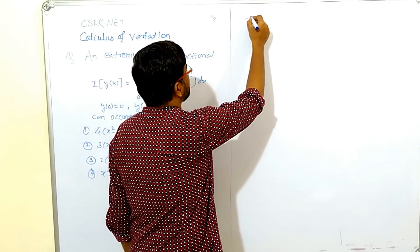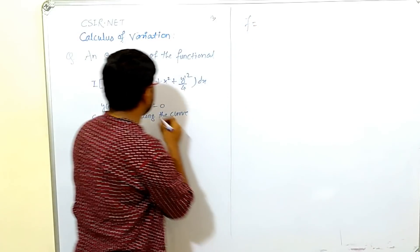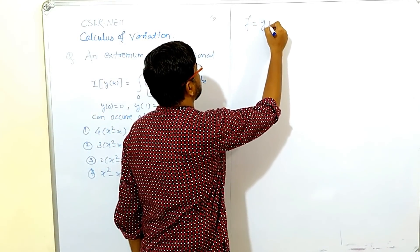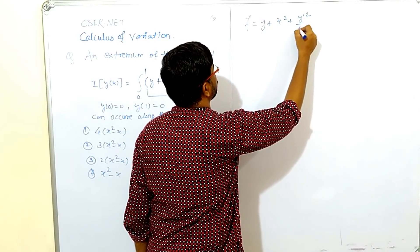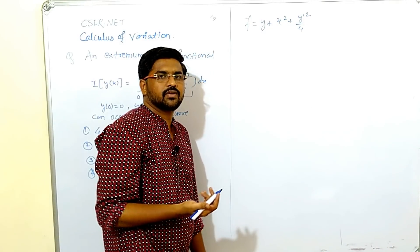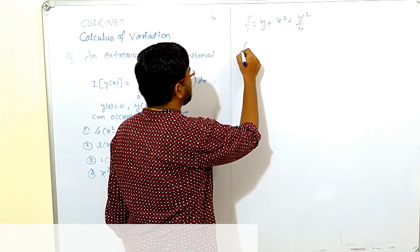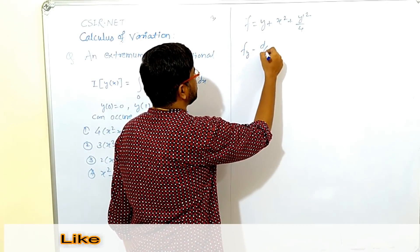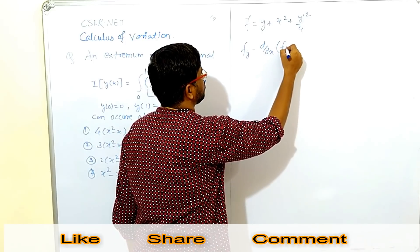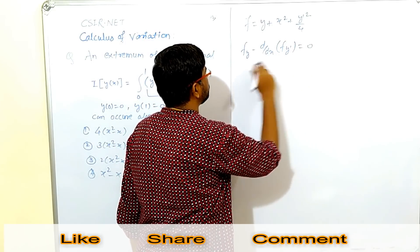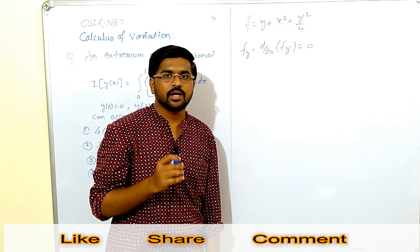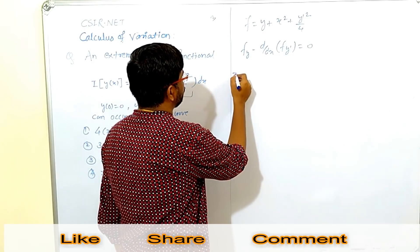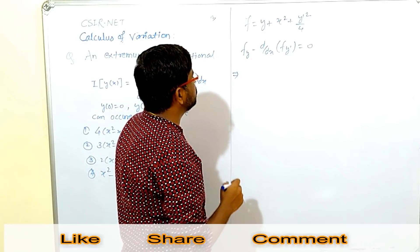Here f is this integrand y plus x square plus y dash square by 4 and we know Euler equation: f_y minus d/dx of f_y dash equals to 0. This is partial derivative with respect to y. This is partial derivative with respect to y dash. What we get from this f and this Euler equation?